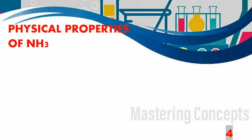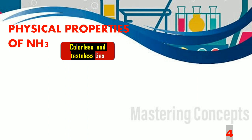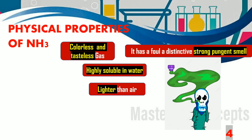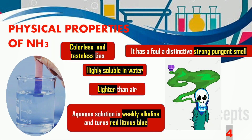Let us now learn about the physical properties of ammonia gas. Ammonia gas is a colourless and tasteless gas which has a foul, distinctive, strong pungent smell. This gas is highly soluble in water and is lighter than air. Aqueous solution of ammonia gas is weakly alkaline in nature and it turns red litmus blue.